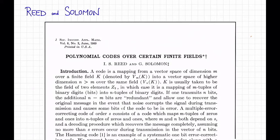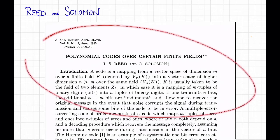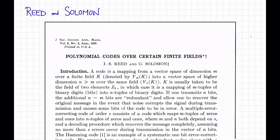Reed-Solomon codes were invented by Irving Reed and Gustav Solomon in 1960. Reed and Solomon were at Lincoln Lab at MIT at the time. In their original paper, they introduced Reed-Solomon codes and showed, as we've already observed, that they have this really great trade-off between rate and distance.